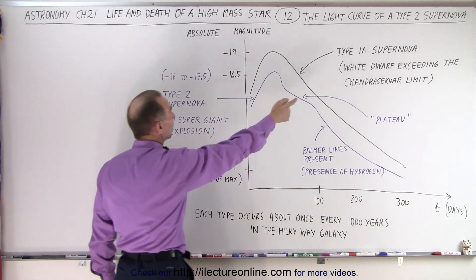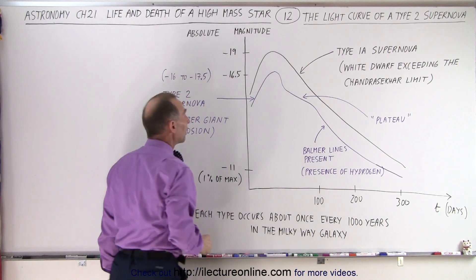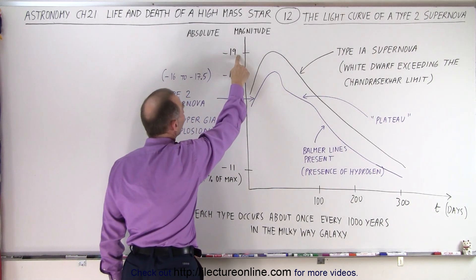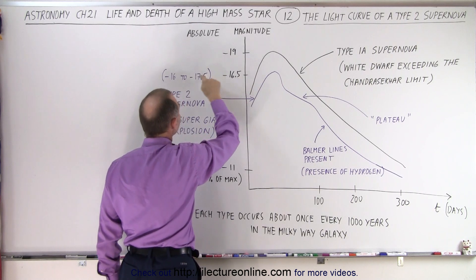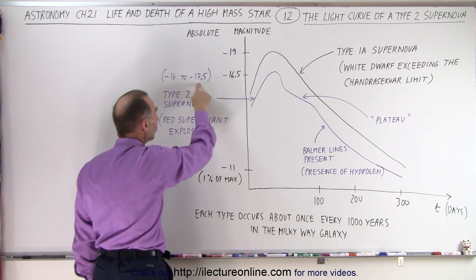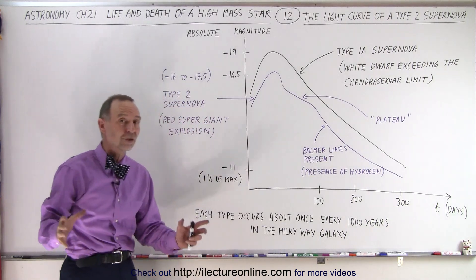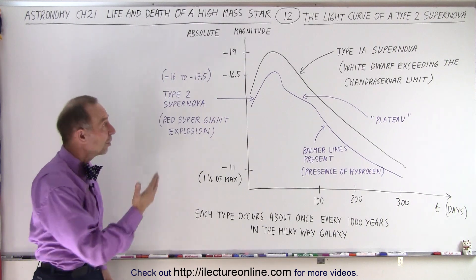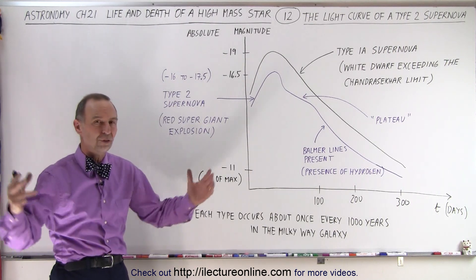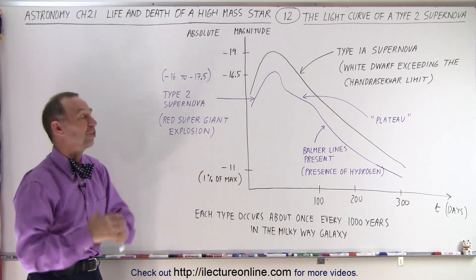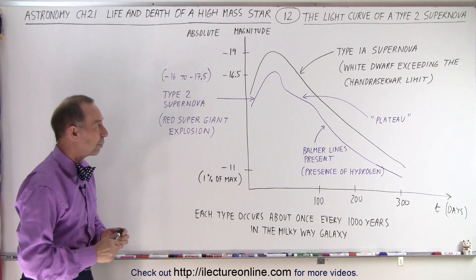As opposed to a Type 1a supernova, it reaches about a minus 19. Now notice, Type 1a supernovas always have about the same brightness when they explode. Type 2 supernovas range from about minus 16 to minus 17.5 because you can have different sizes of red giants that go to the stage. When it comes to Type 1a supernovas, our white dwarf is imploding it on themselves. Well, there's only one size of which that happens, so they're all exactly the same brightness.